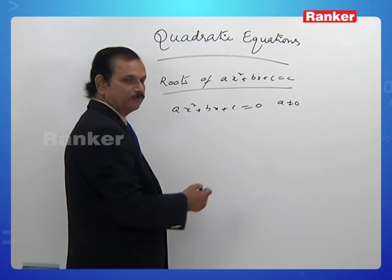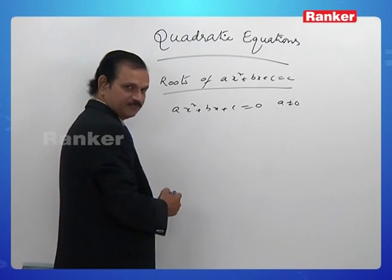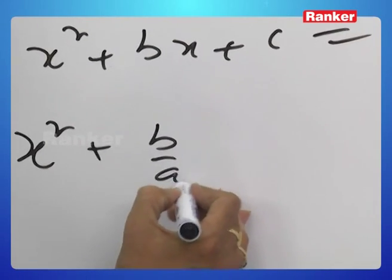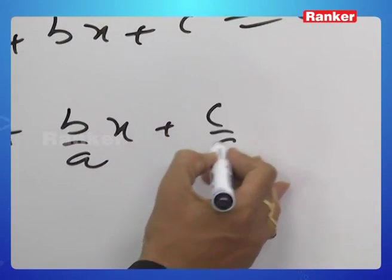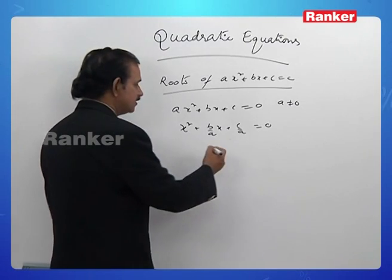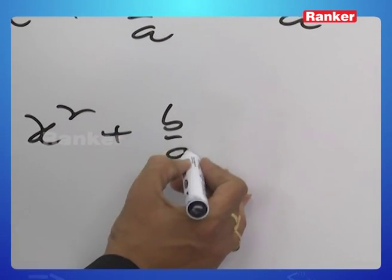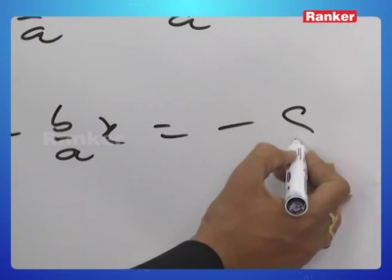As a is not equal to 0, let us divide this entirely by a. Then x² plus b/a times x plus c/a equals 0. Send this c/a to that side: x² plus b/a times x equals minus c/a.